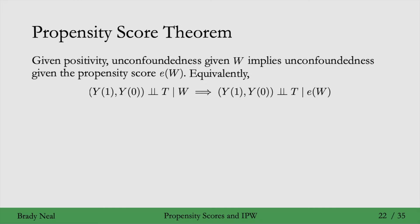Mathematically, we can write it as follows. To see why this is true, I'll give you a graphical proof. Consider that this is the graph, that W is a confounder of the effect of T on Y, and importantly here, W is a sufficient adjustment set.